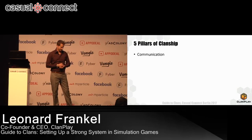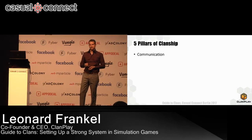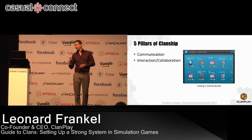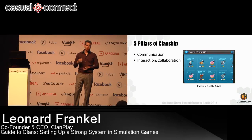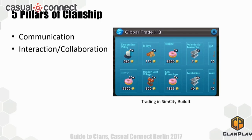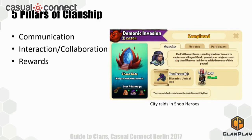The five pillars of clanship are the five key things you need to create a clan in your game. You've got to start with communications — you've got to let players communicate among themselves. If you want them to collaborate, they need to be able to coordinate. Collaboration is very important; the more reasons they have to interact and work together, the stronger they will connect to one another. This is from SimCity Build It, where you can trade — a very fun element. I personally spent hours trading in this game.